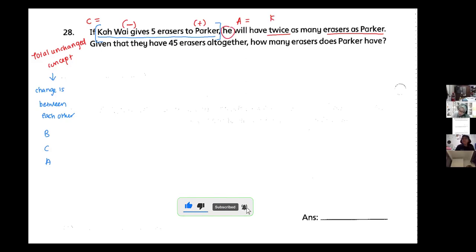Then, he will have twice as many erasers as Paka. So this is my after. Who is the he? He means Kawai. Will have twice, twice means two units, as many erasers as Paka, so Paka is one unit. Then if you move on to the next sentence: They are given a total of 45 erasers altogether. So this is actually my before information. I only know the total of 45.